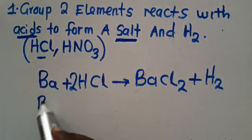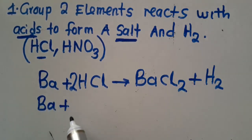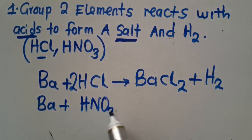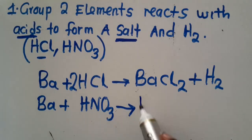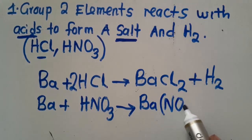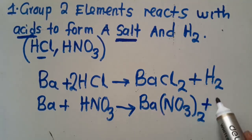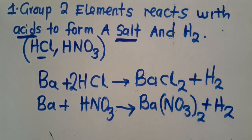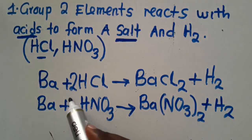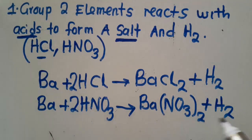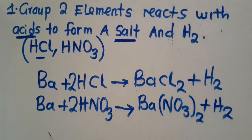If you react barium with nitric acid, HNO₃, what you form is barium nitrate Ba(NO₃)₂ plus hydrogen gas. Barium has a valence of 2+ and nitrate has a valence of 1−, which comes to the barium side. We don't show the 1. Then add hydrogen gas. To balance, you put a 2.